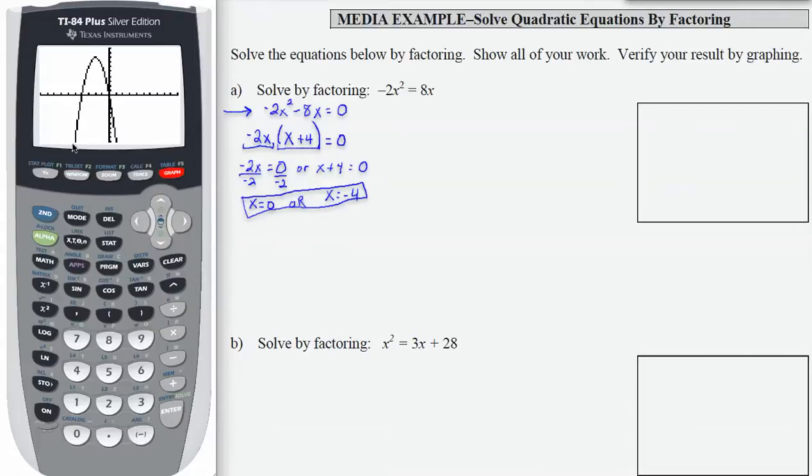Notice I have a parabola that opens up and crosses the horizontal axis in two places. What I'm going to check and make sure is that it crosses at negative 4 and 0, and that will verify my solutions.